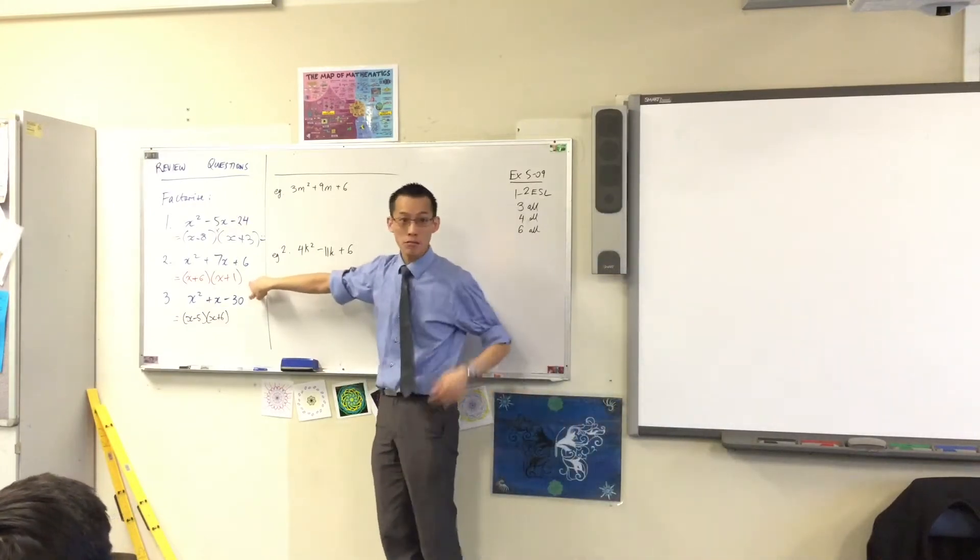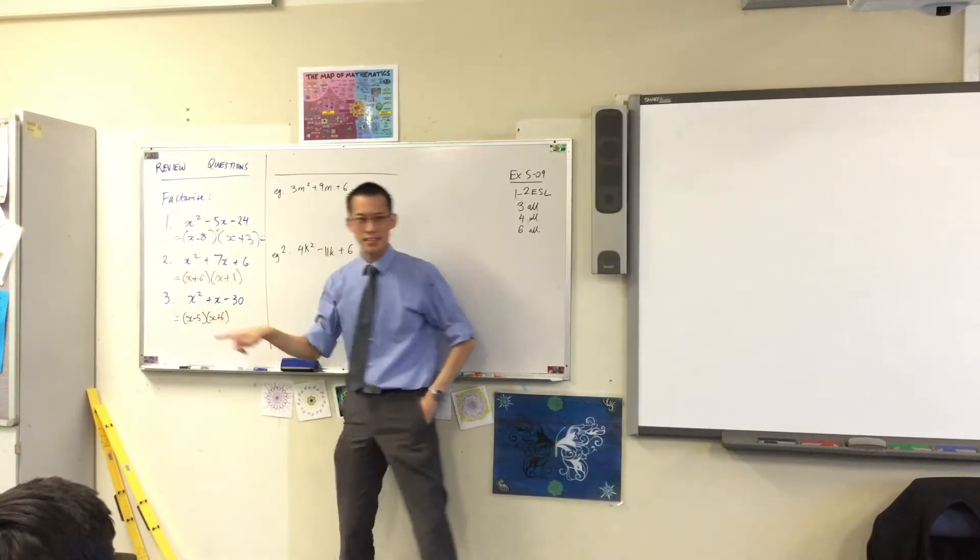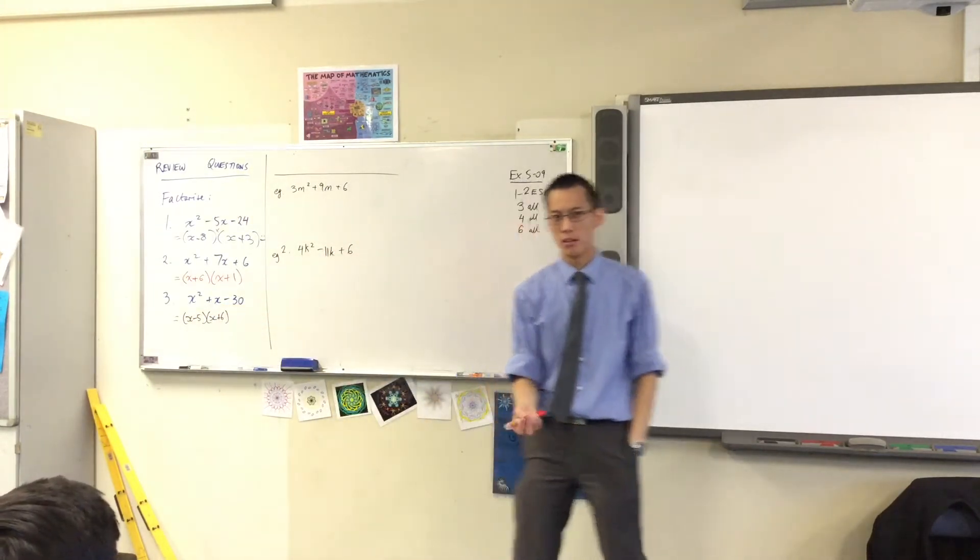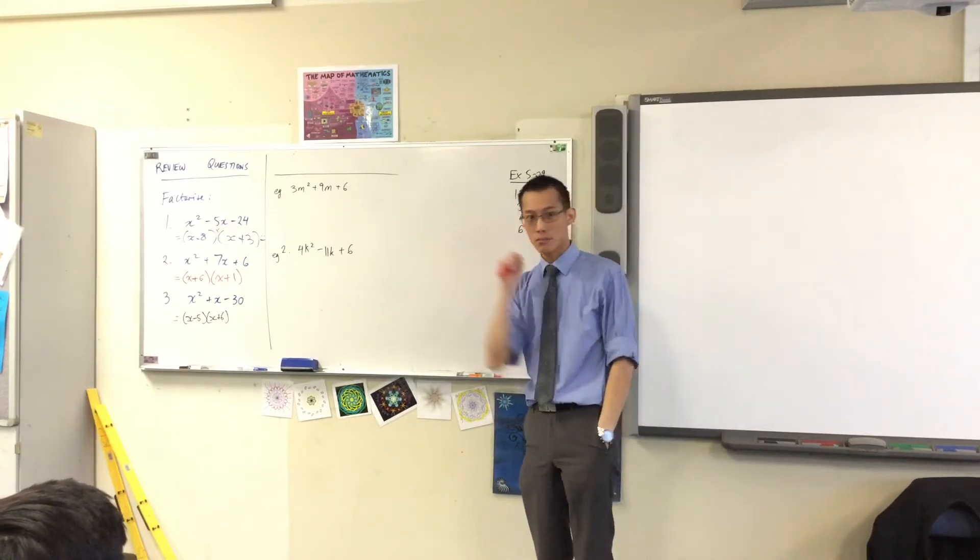x plus 6, x plus 1? Yeah. Thumbs up. Excellent. And last one, negative 5 and 6, do they add up to 1? Yes. Do they multiply to negative 30? Right. Excellent.